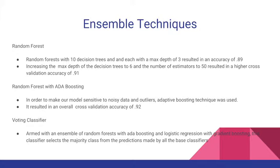To further improve random forest performance, we applied AdaBoost (adaptive boosting) to make our model more sensitive to noisy data and outliers. After using this technique, the overall prediction accuracy improved to 0.92. We also used a voting classifier, combining random forests, AdaBoost, logistic regression, and gradient boosting, where the classifier selects the majority class from predictions made by all base classifiers.